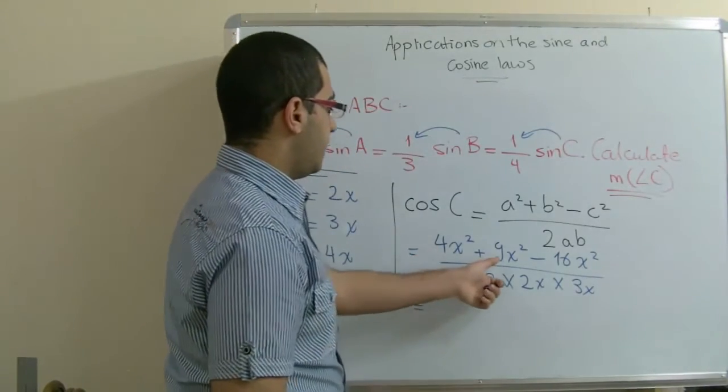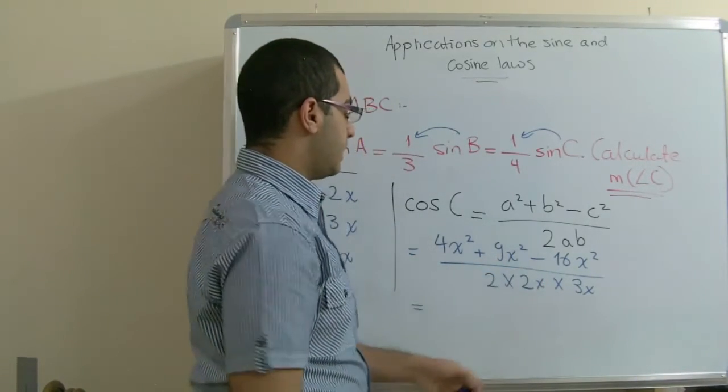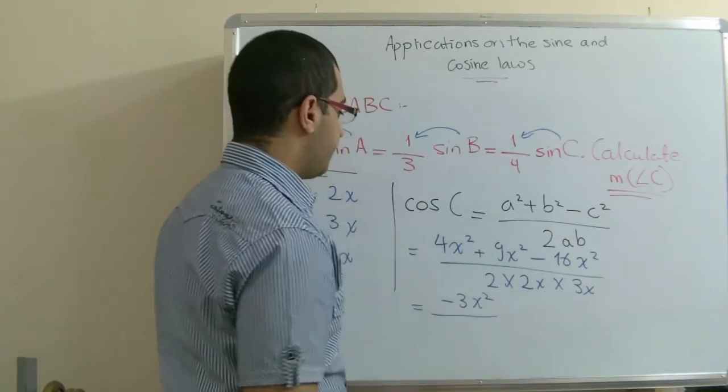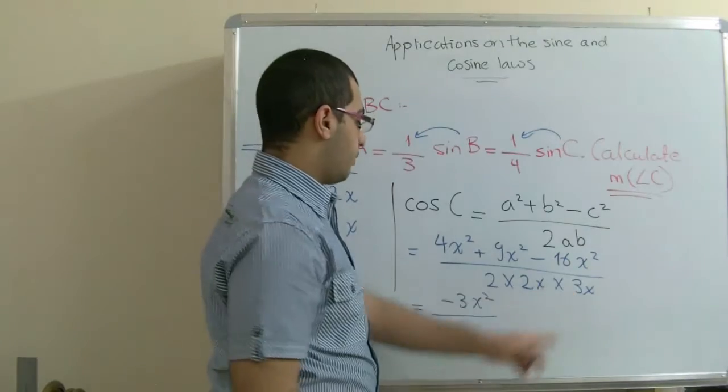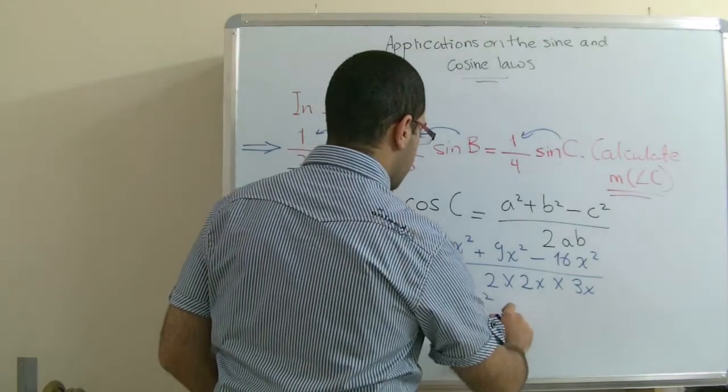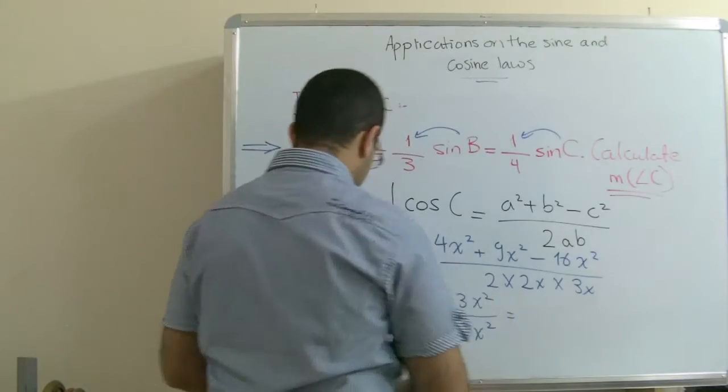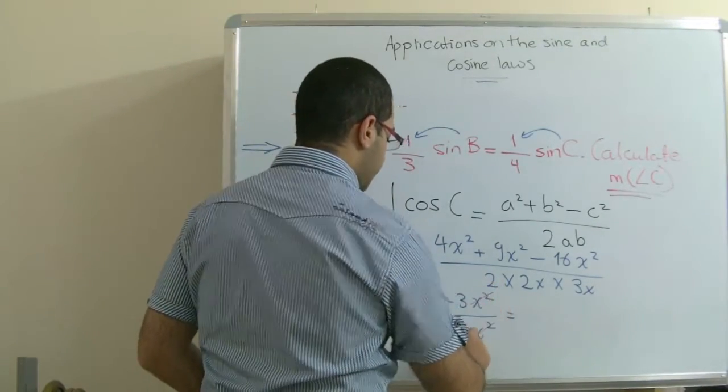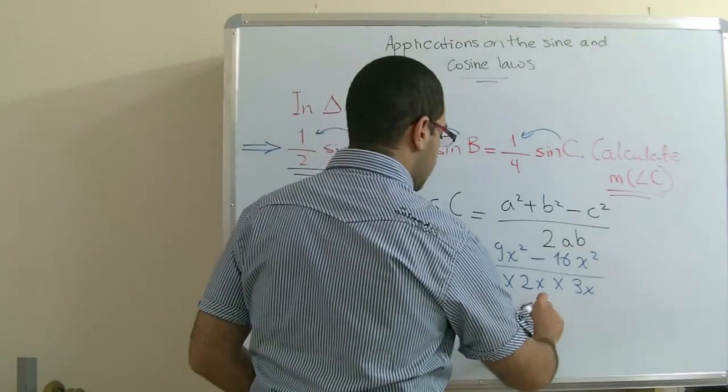So we get 13x squared negative 16x squared to get negative 3x squared over 4 by 3, 12x squared. So both x squared will be cancelled together to get finally negative quarter.